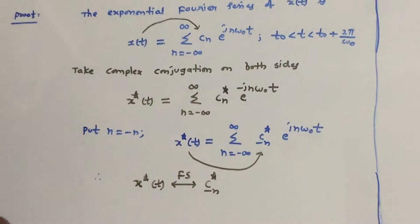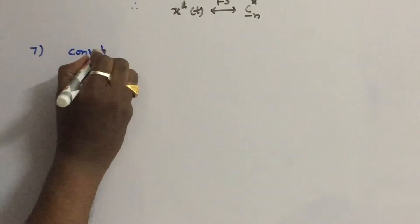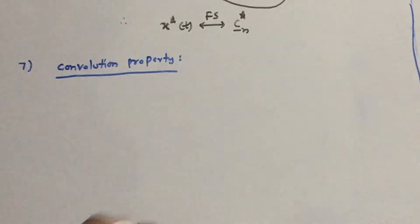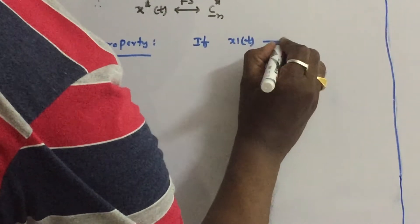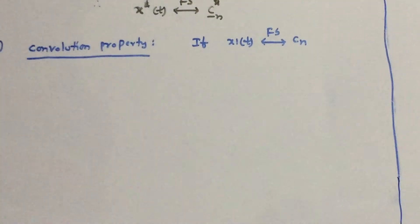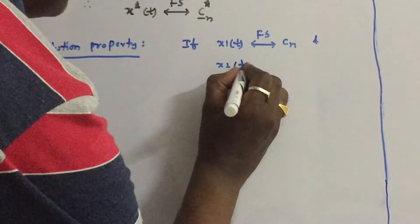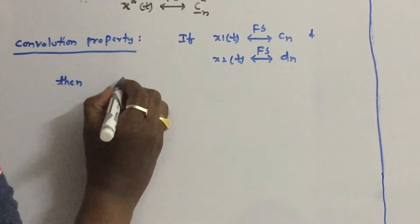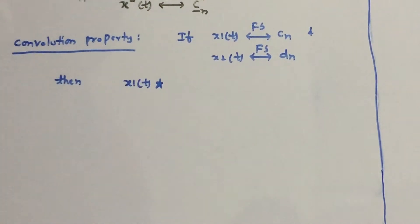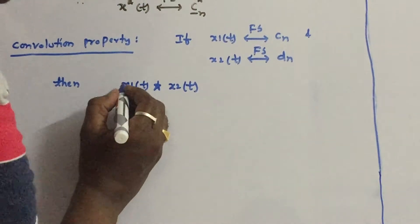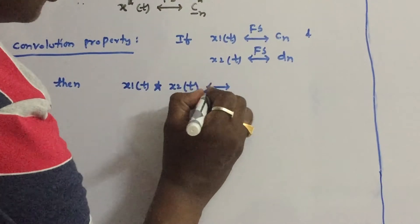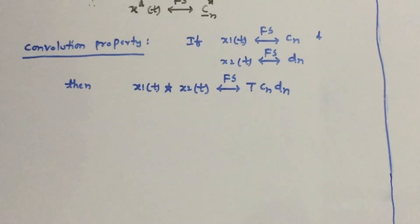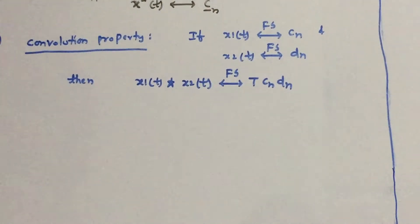Next, let us see the seventh property, a very important one: the Convolution Property. If x1 of t's exponential Fourier series coefficients are cn, and x2 of t's exponential Fourier series coefficients are dn, then the convolution of x1 of t with x2 of t has exponential Fourier series coefficients equal to cn times dn. That is, convolution leads to multiplication of the exponential Fourier series coefficients.